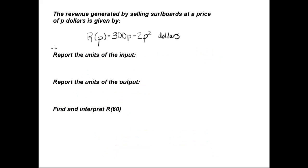Let's look at an example of a function associated with an applied problem. The revenue generated by selling surfboards at a price of p dollars is given by r of p equals 300p minus 2p squared. Here, our input is p in dollars, and the output is the revenue r of p, which is also in dollars.